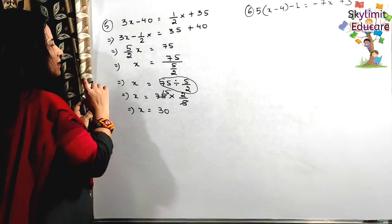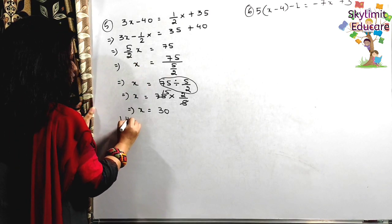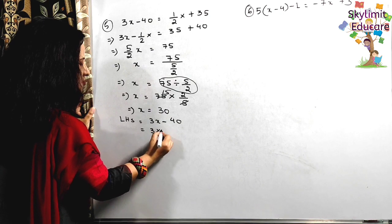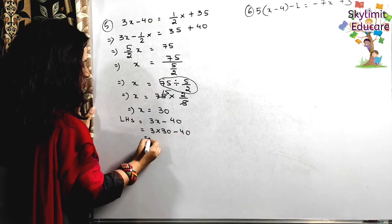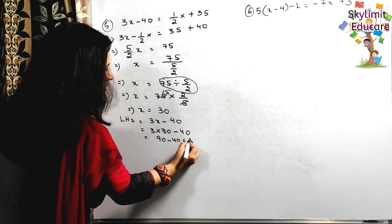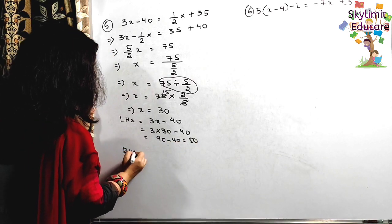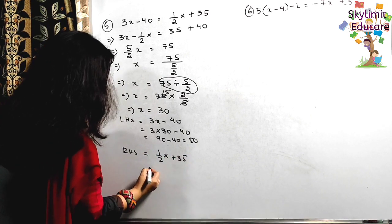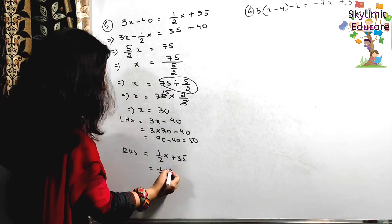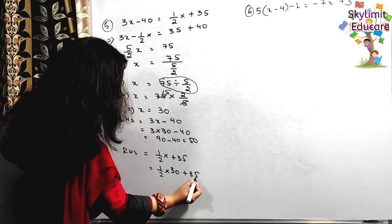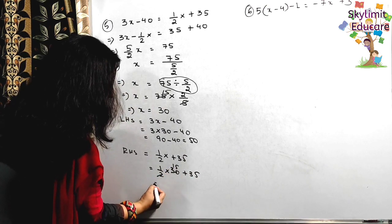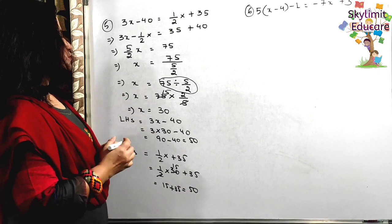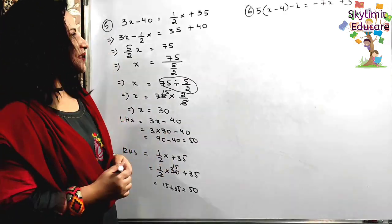Let's verify. LHS is 3x - 40: substitute x = 30, so 3 × 30 - 40 = 90 - 40 = 50. RHS is (1/2)x + 35: so (1/2) × 30 + 35 = 15 + 35 = 50. LHS = RHS = 50. Hence verified.